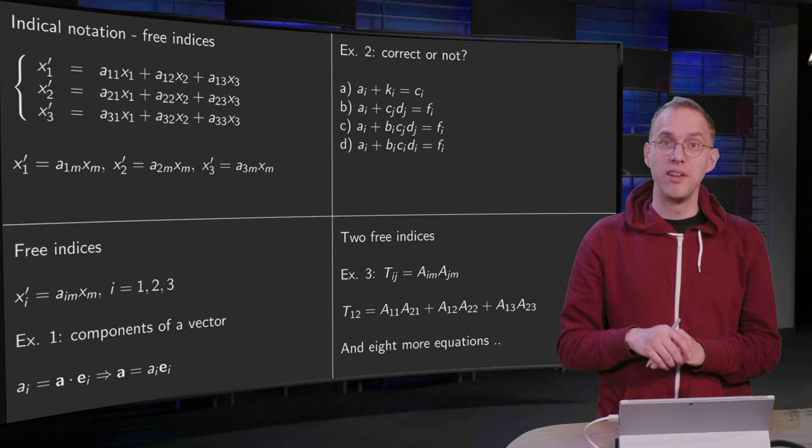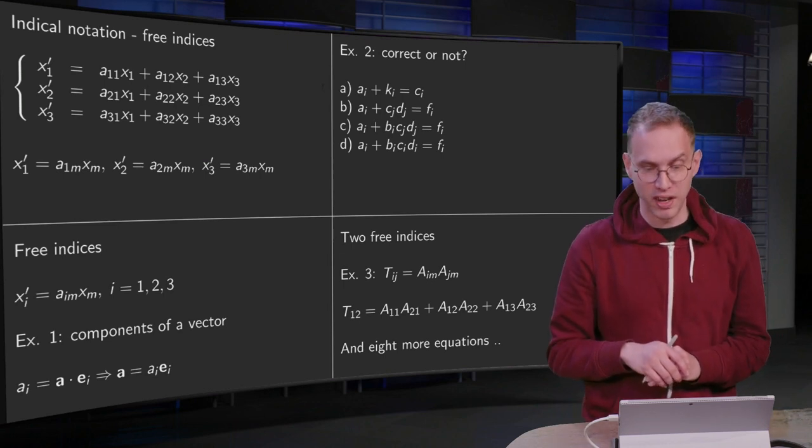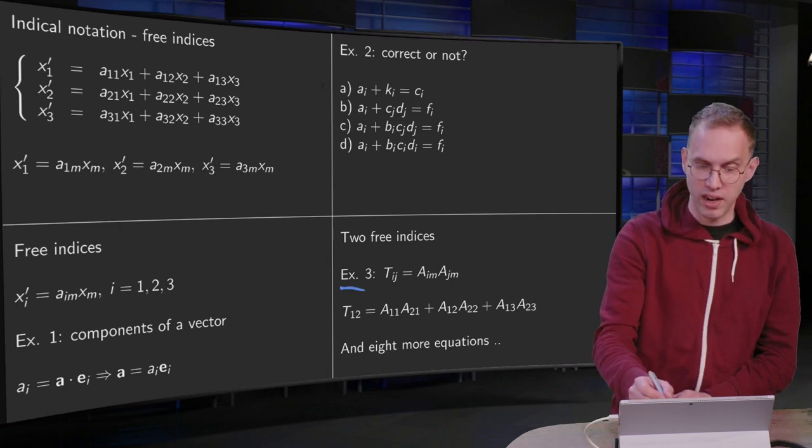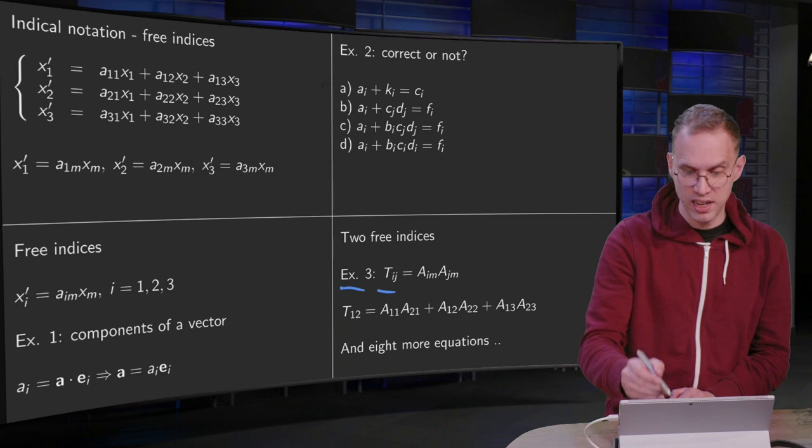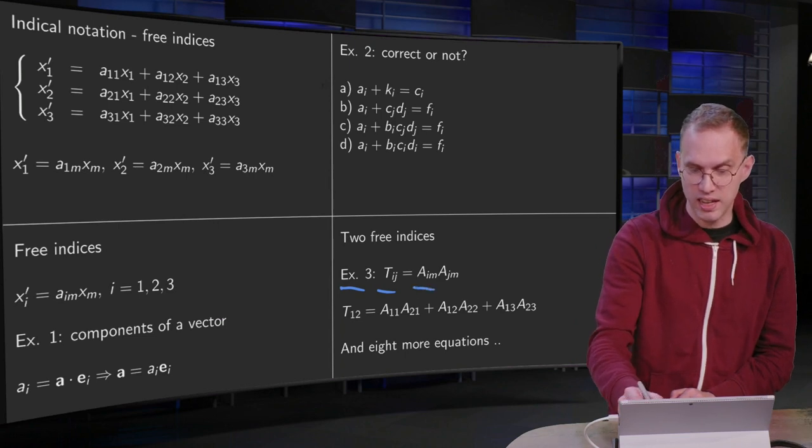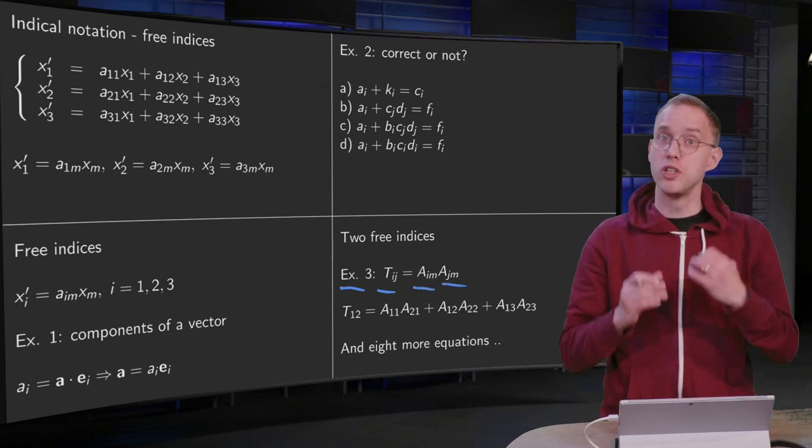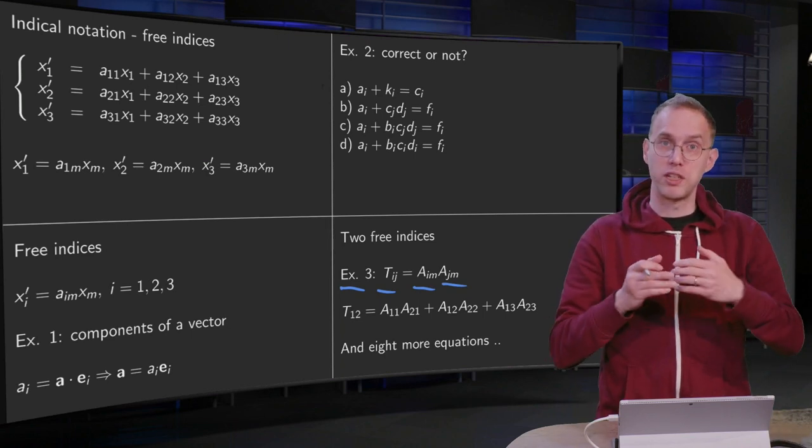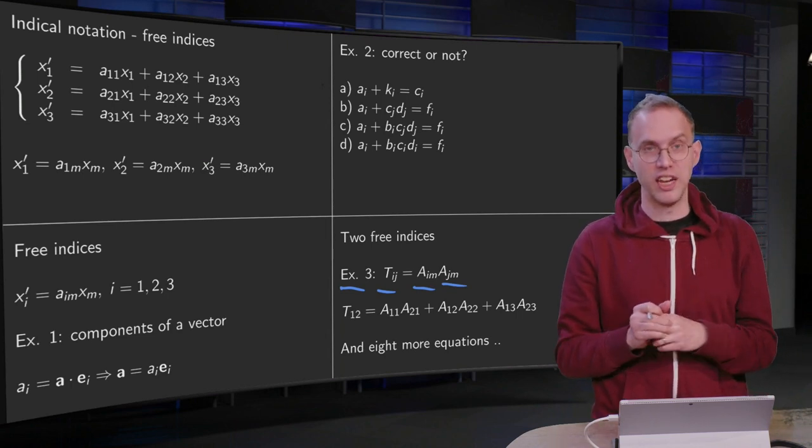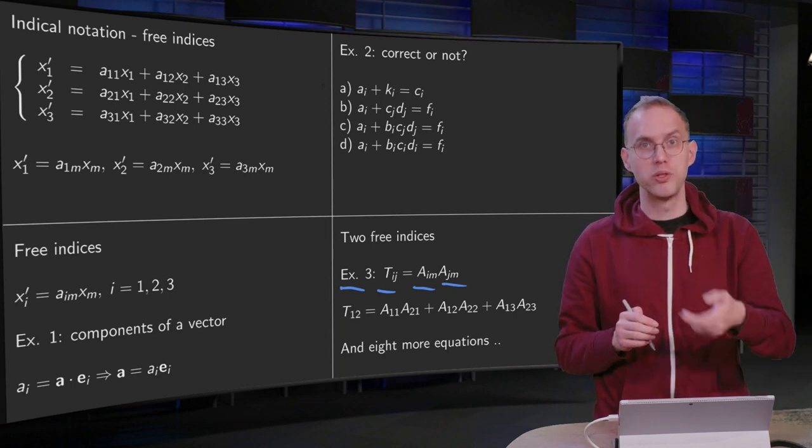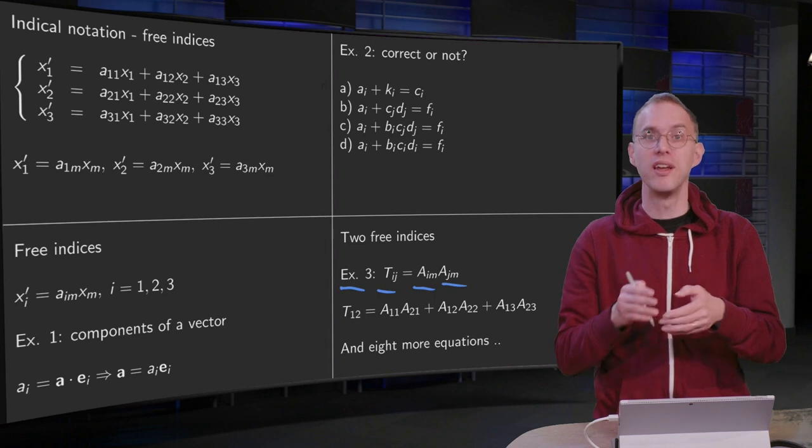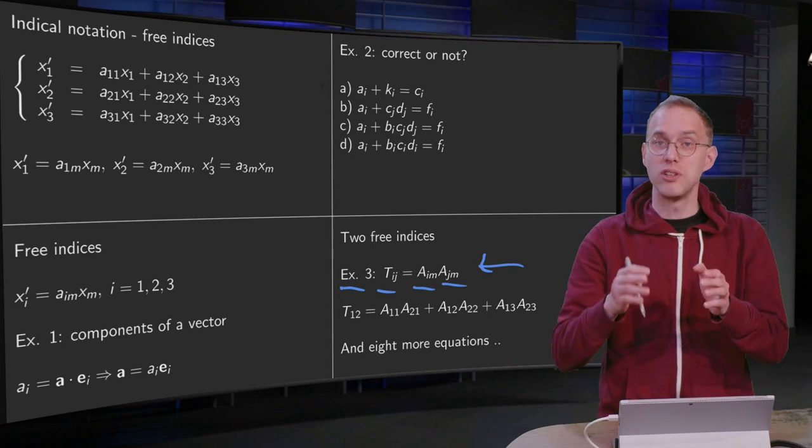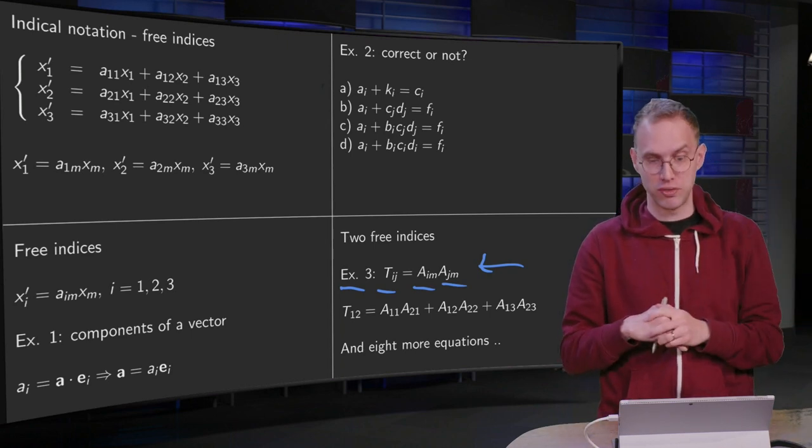Finally, we can make it even nicer. If you have two free indices, in Example 3, we can write Tij with free indices i and j as aim ajm. What this means is that you have the sum over m and you have an expression here for all those i and j. So we have T11, T12, T13, up to T33—actually what it says here is that you have nine expressions for all possible values of i and j.